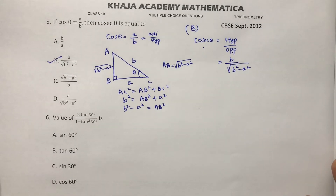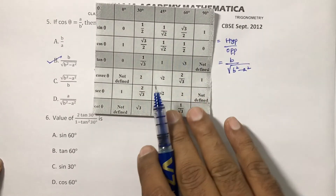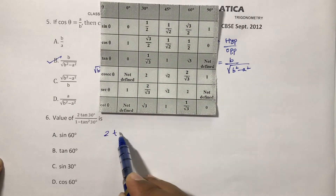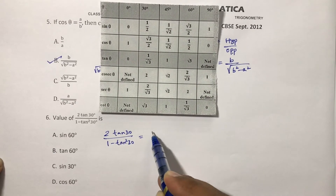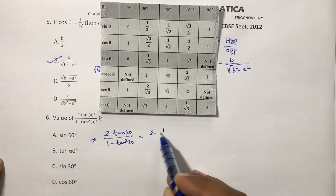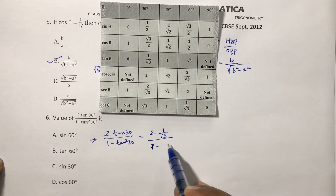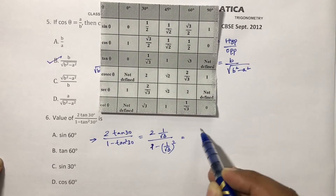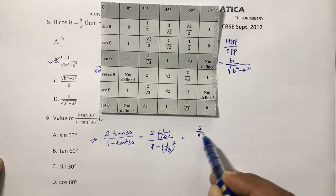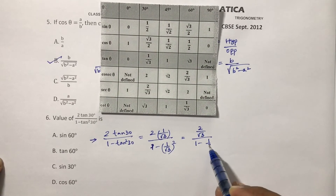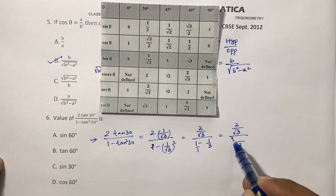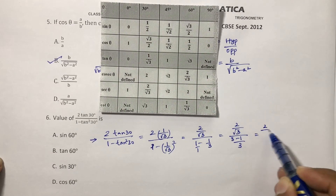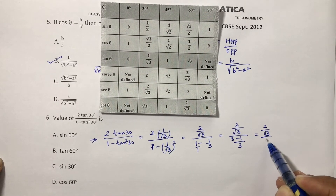Find the value of 2 tan 30 by 1 minus tan squared 30. Take the help of the table: tan 30 is 1 by root 3. So this becomes 2 times 1 by root 3 over 1 minus 1 by root 3 squared, which is 2 by root 3 over 1 minus 1 by 3.